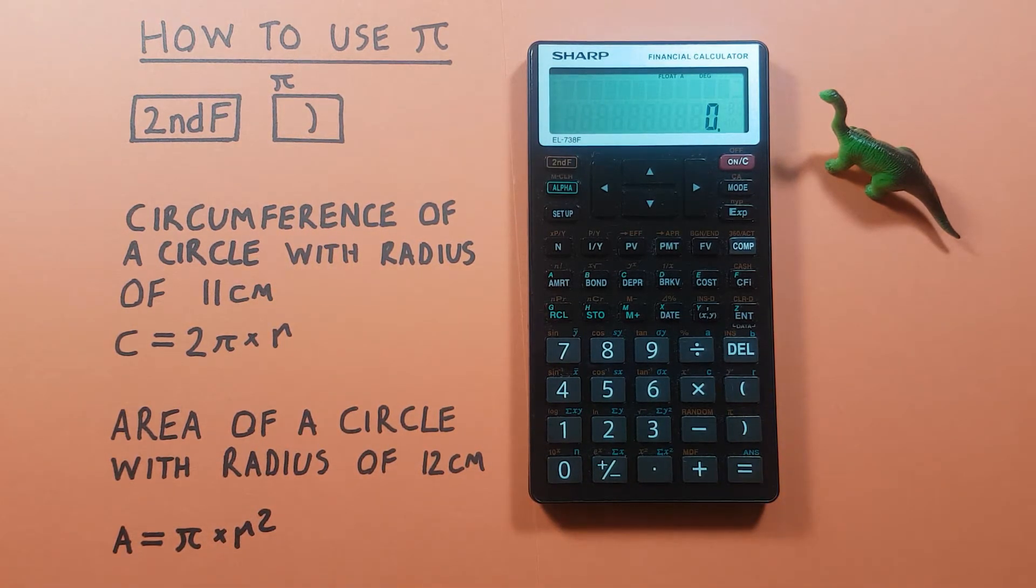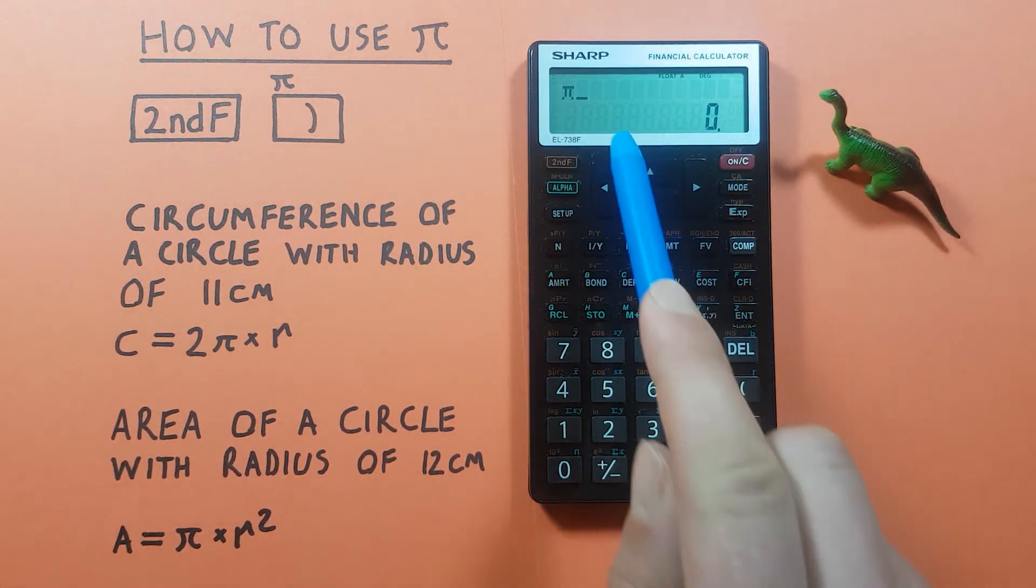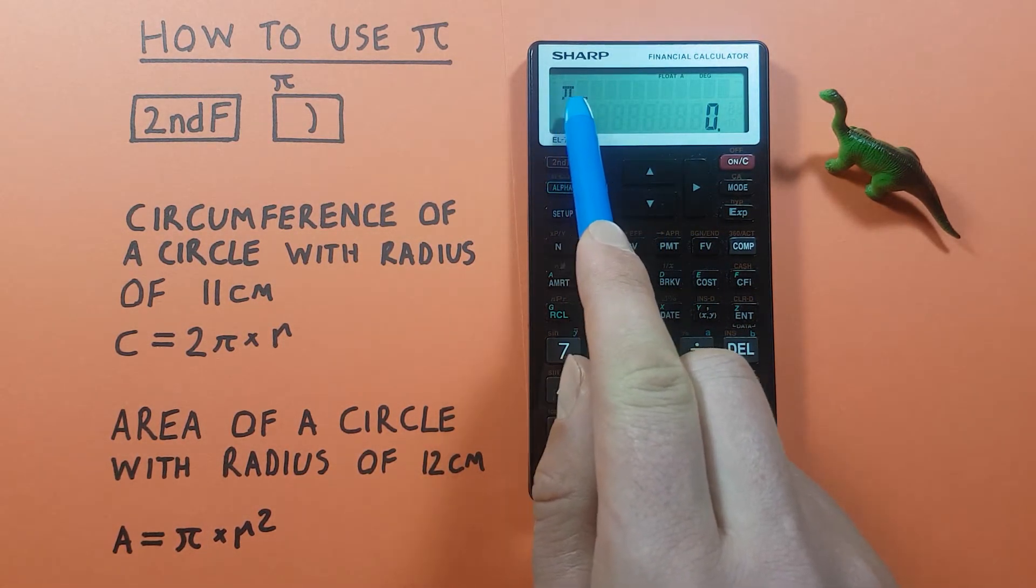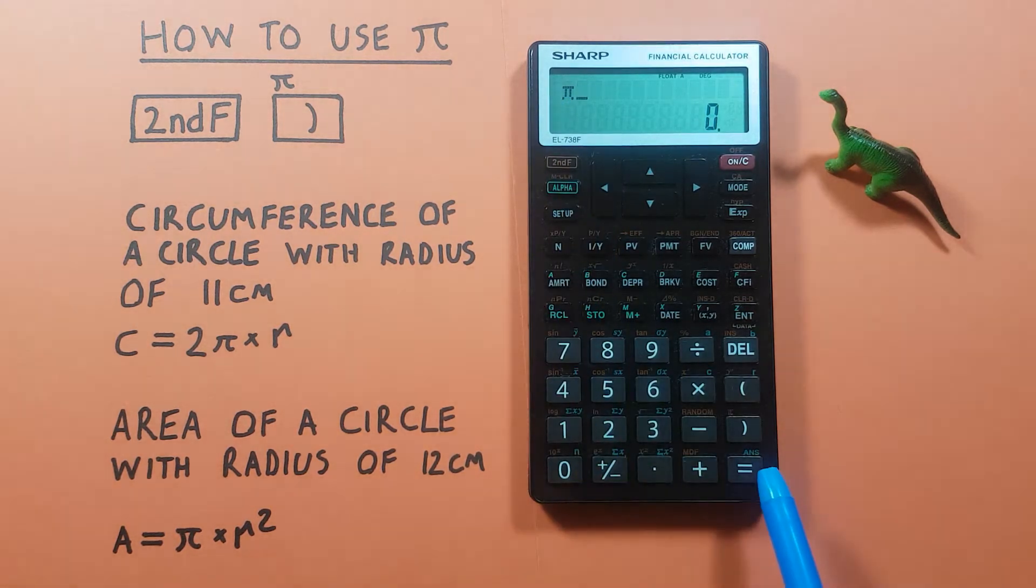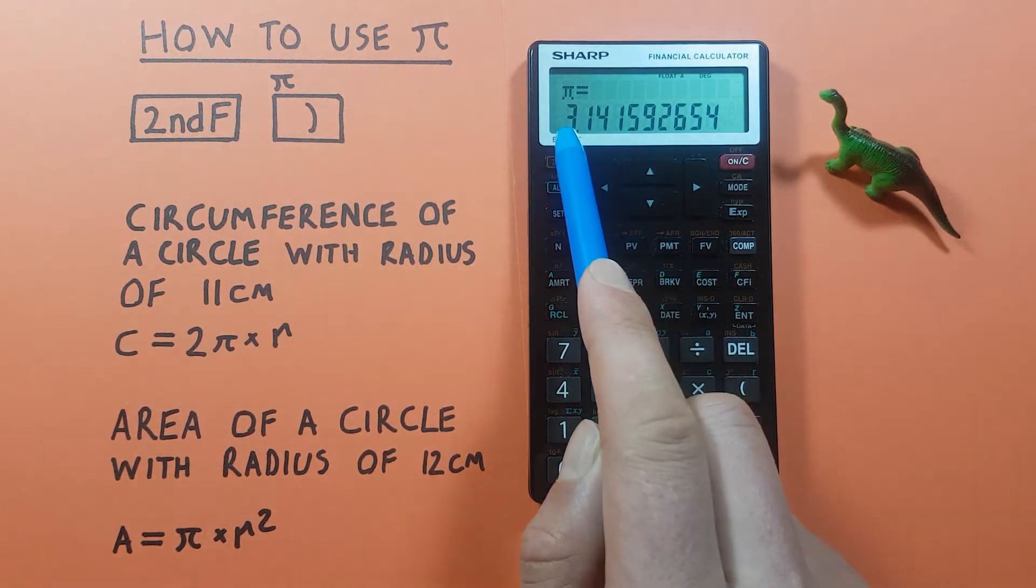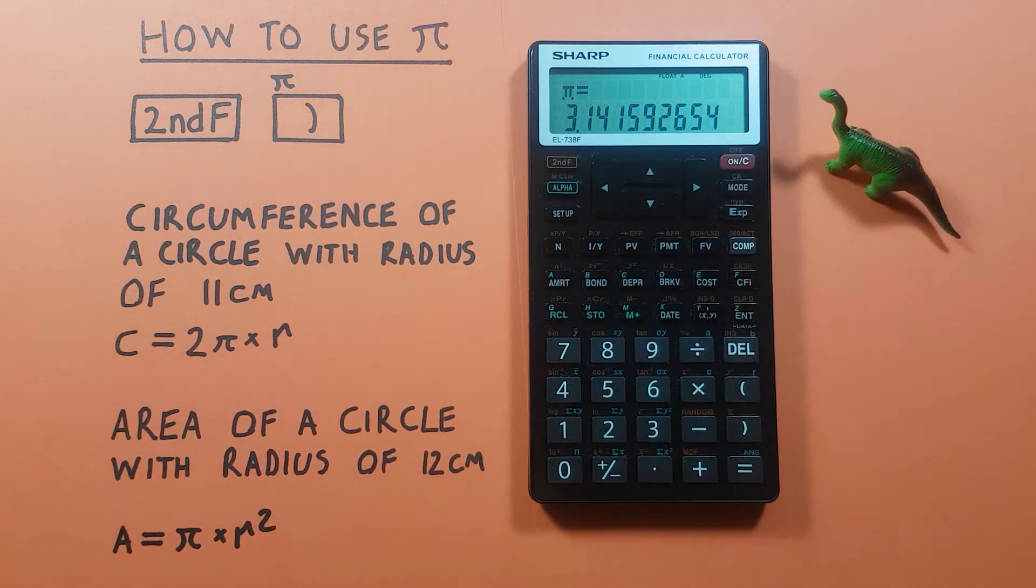We can bring up PI by pressing second function and then the bracket. We'll see the PI symbol appear on our screen, and if we press equals, we get 3.14 and so on.